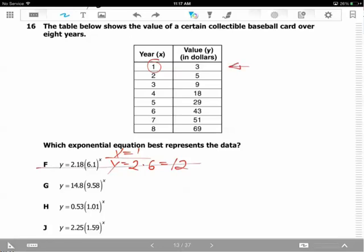For G, substituting x = 1, y will be 14.8, approximately 15, times 9.58 to the power of 1. You can approximate 9.58 to 9 or 10, but the most correct would be 10 since it's greater than 0.5. That's 150, but it has to be 3. Not good. Moving on to the next one.